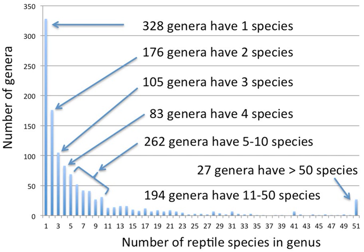Each genus should have a designated type, although in practice there is a backlog of older names without one. In zoology, this is the type species, and the generic name is permanently associated with the type specimen of its type species. Should the specimen turn out to be assignable to another genus, the generic name linked to it becomes a junior synonym and the remaining taxa in the former genus need to be reassessed.